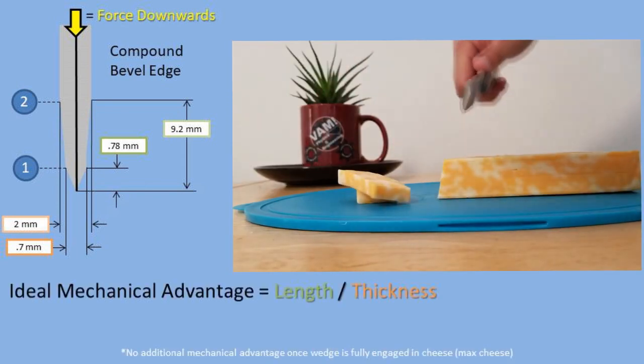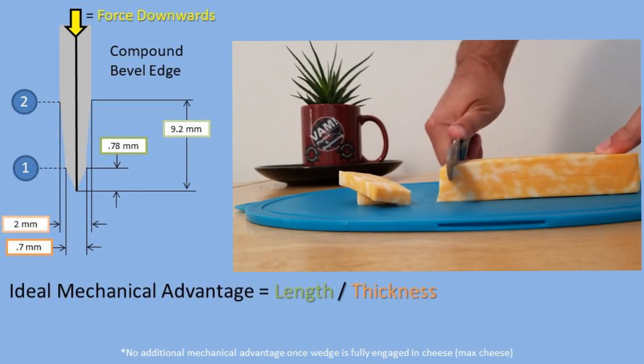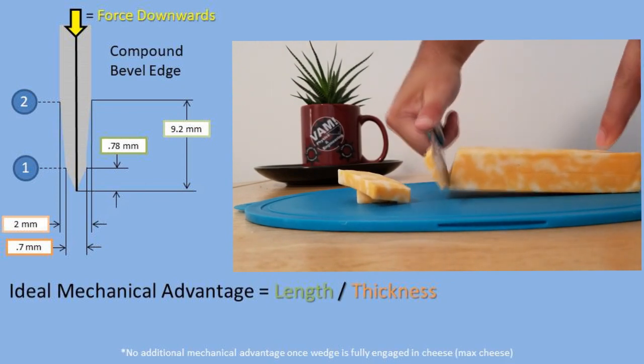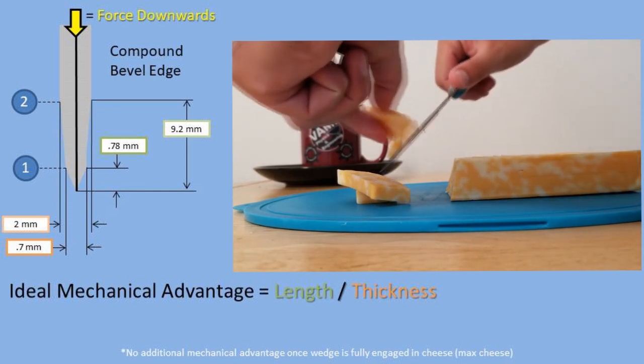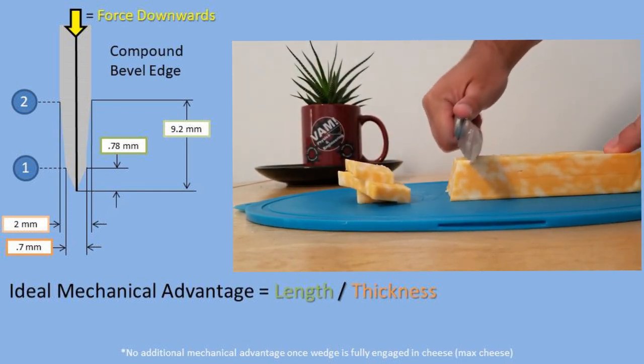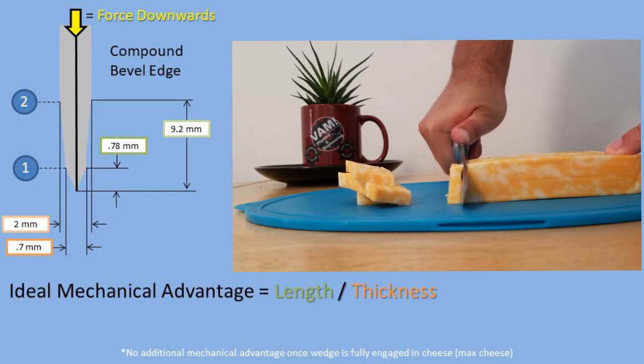The wedge is another form of inclined plane, much like other simple machines where if you convert a force with a larger displacement to a force with a smaller displacement, the force increases. The amount this force increases by is the mechanical advantage.